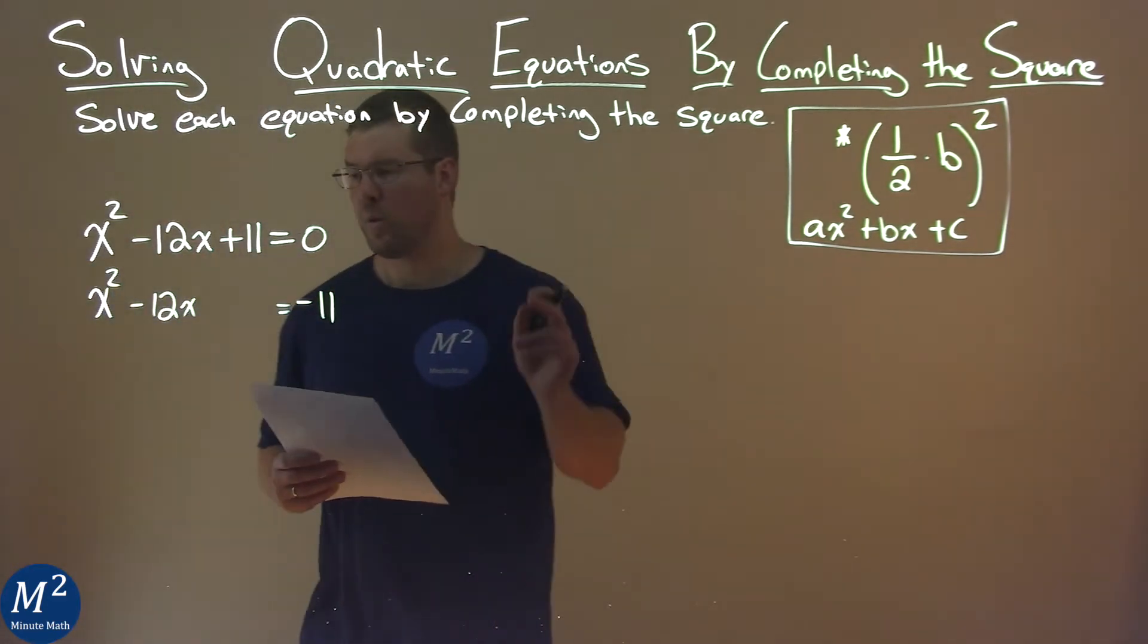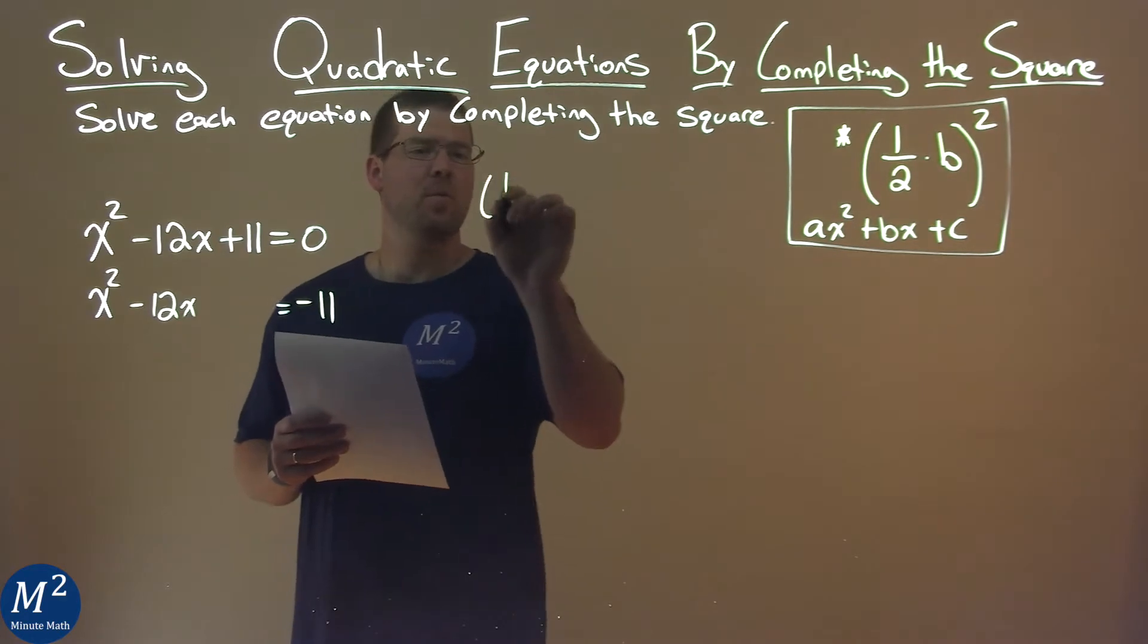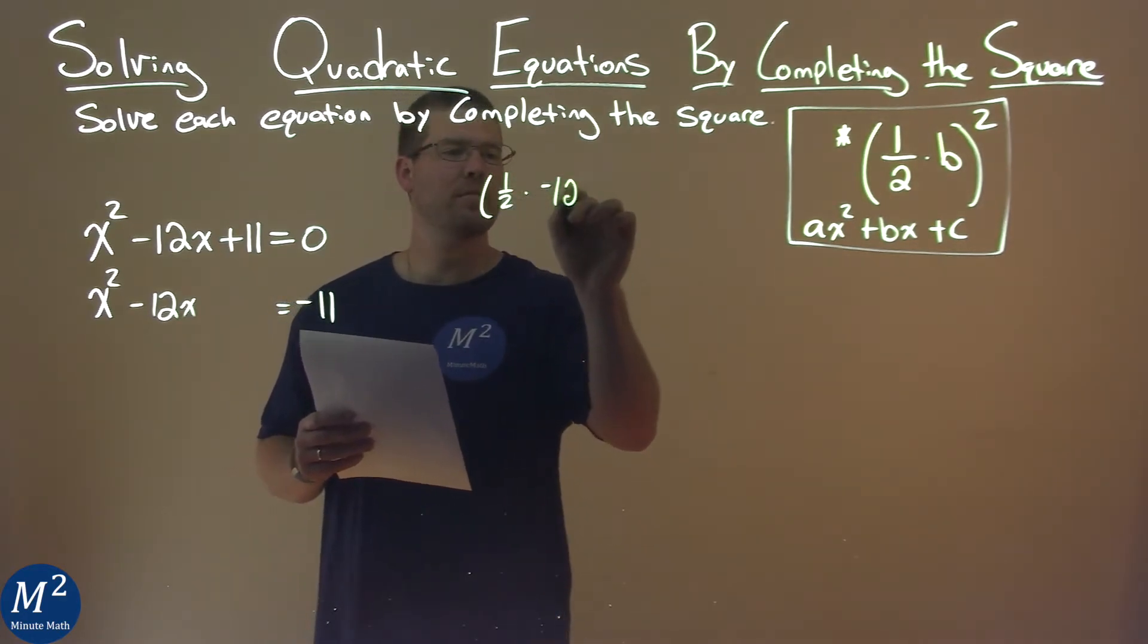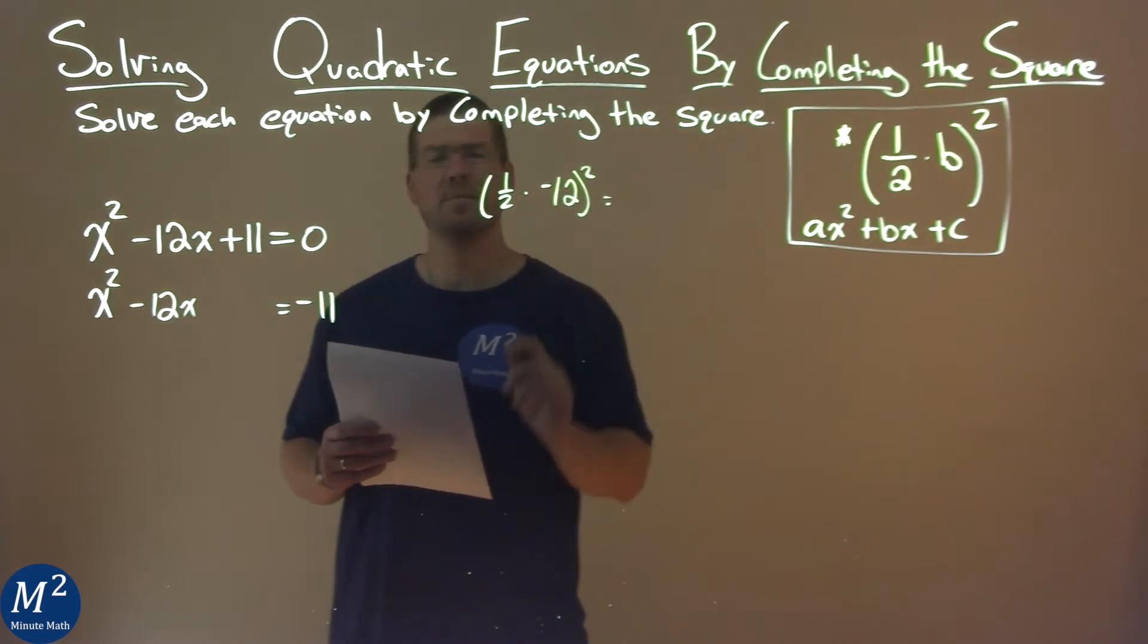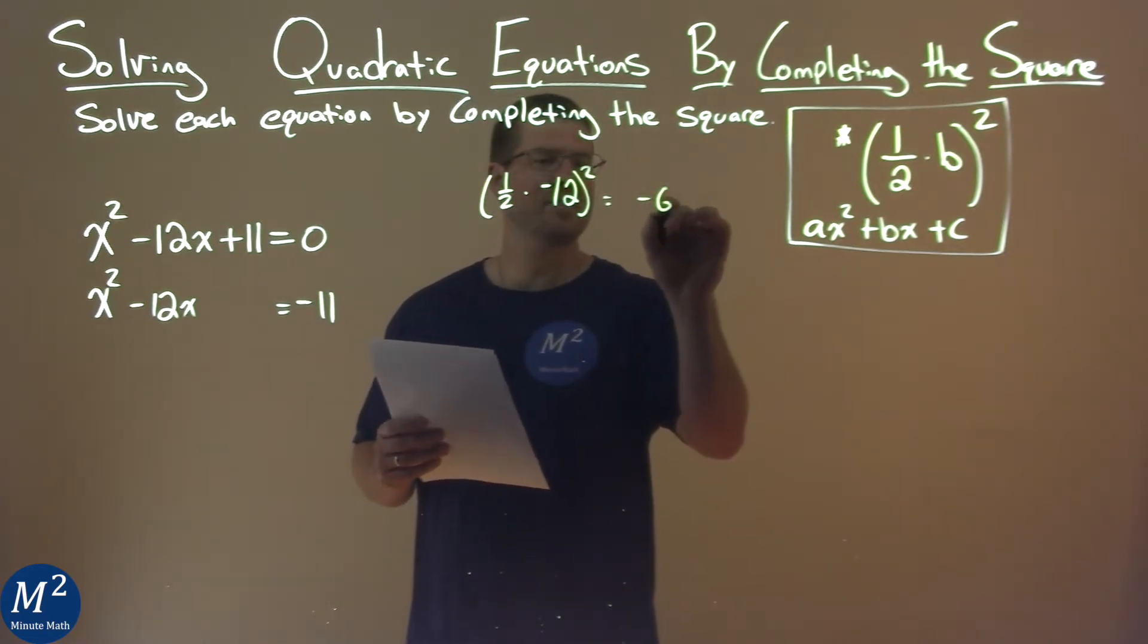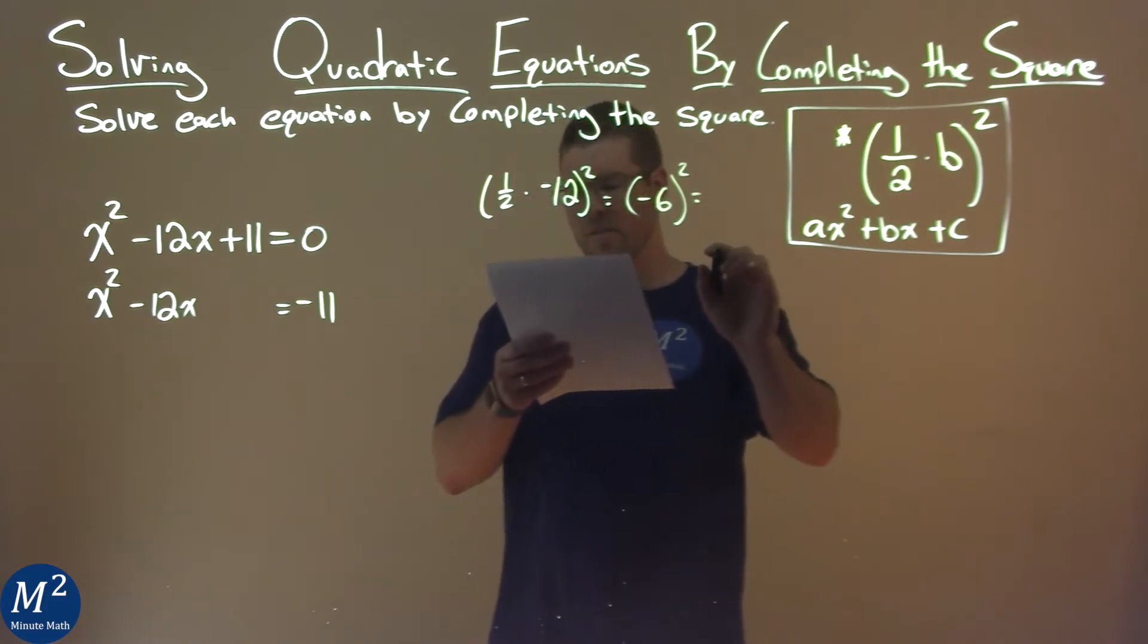My b value is negative 12, so I'll use my formula: one half times negative 12 squared, but one half times negative 12 is negative 6. Square all that, and we get a positive 36.